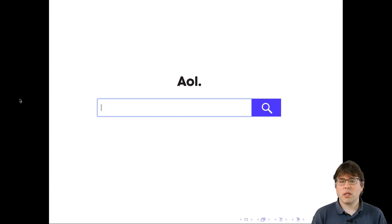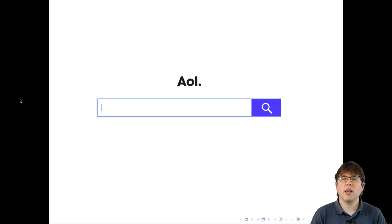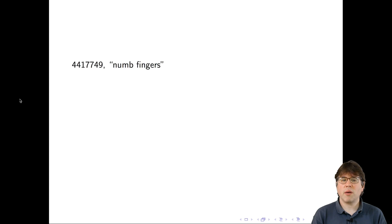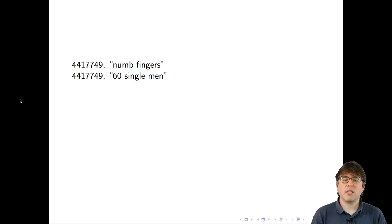AOL — short for America Online — ran a search engine and researchers there wanted to make search queries available to other researchers, with the idea that the queries could help stimulate better ways of doing search and support other kinds of research. They released a large set of search queries and removed things like IP addresses. But from the sequence of queries, it became possible to re-identify people. Let's look at the searches from user 4417749: numb fingers, 60 single men, dogs that urinate on everything, landscapers in Lilburn, Georgia, several people with the last name Arnold, and homes sold in Shadow Lake subdivision, Gwinnett County, Georgia.